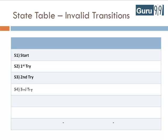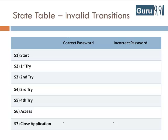In a state table, all the valid states are listed on the left side of the table, and the events that cause them are listed on the top. Each cell represents the state the system will move to when the corresponding event occurs. For example, while in state S1, if you enter the correct password, you are taken to state S6. Likewise, you can determine all other states. Using this method, two invalid states are highlighted.